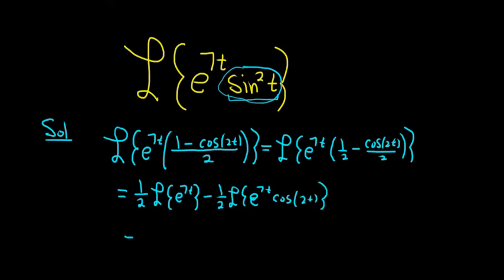So for the first Laplace transform, we can just use the formula. Recall the formula for the Laplace transform of e to the at is simply 1 over s minus a. So in this case, it's 1 half times 1 over s minus 7, minus 1 half.